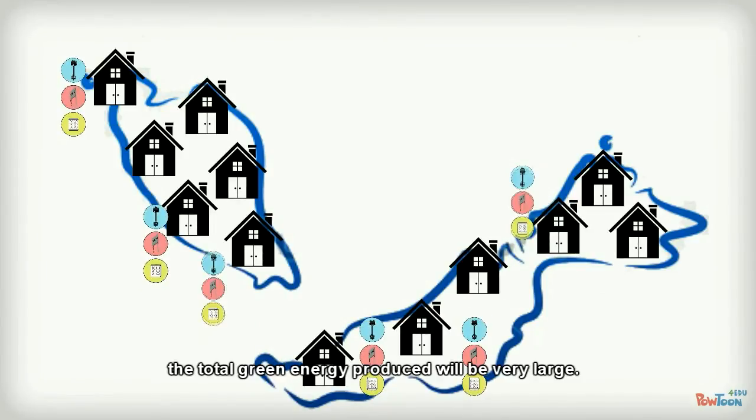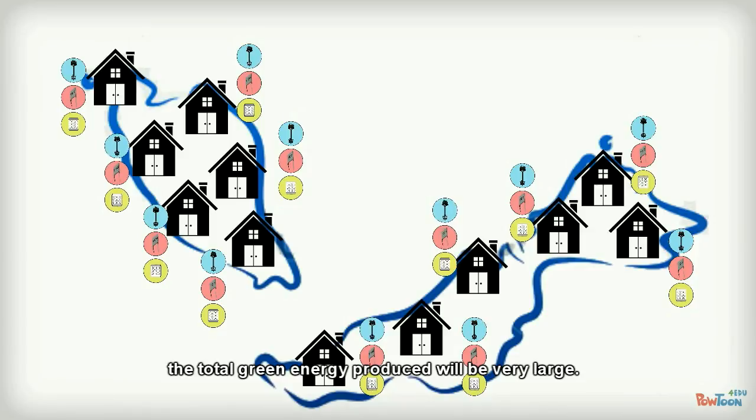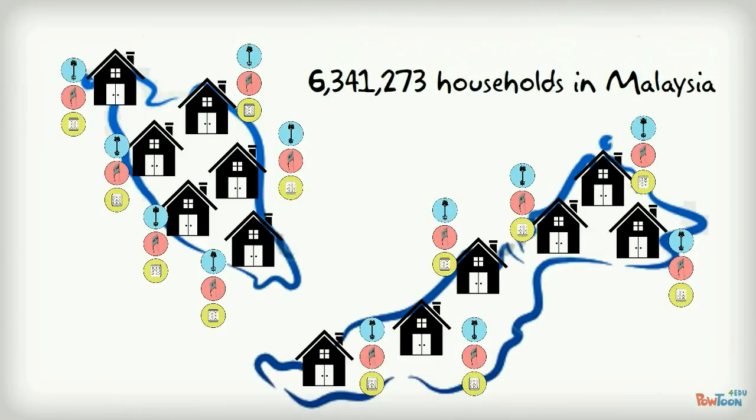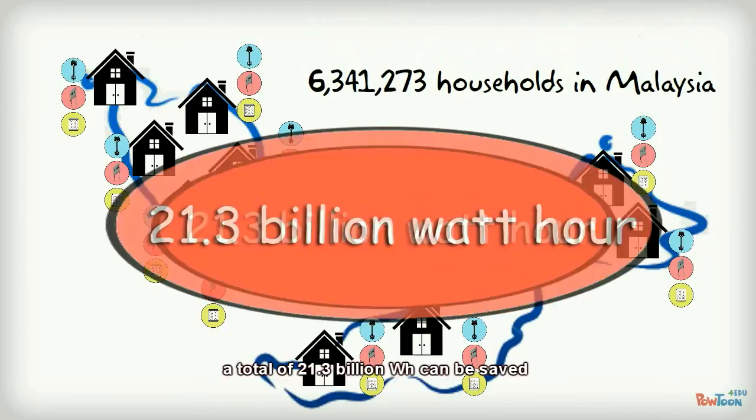With a total of 6,341,273 households in Malaysia, a total of 21.3 billion watt-hours can be saved, and this is equal to 13,070 barrels of oil.